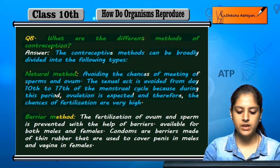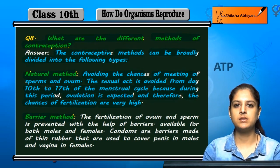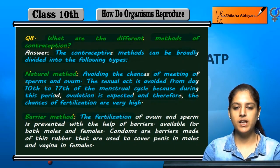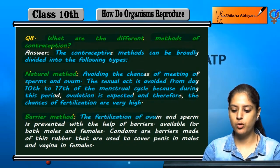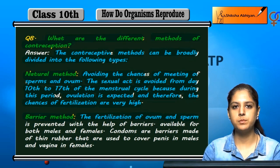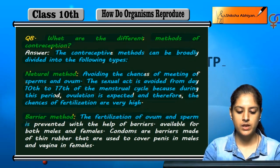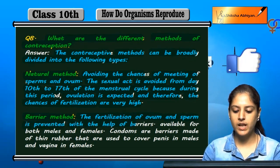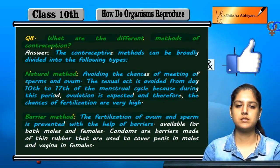Next is the barrier method. The fertilization of ovum and sperm is prevented with the help of barriers.